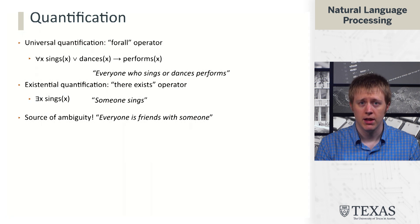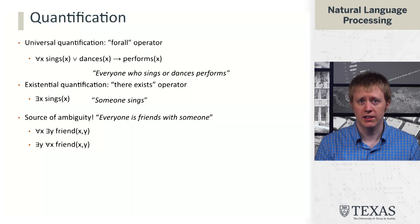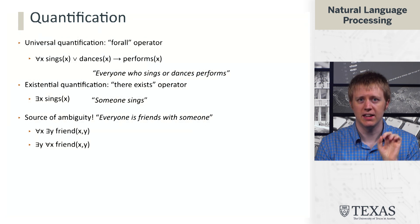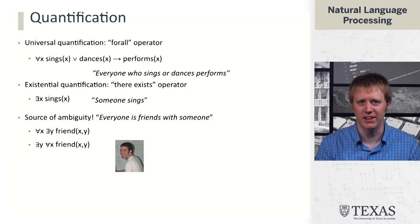Quantification is also a source of ambiguity. The statement 'everyone is friends with someone' has two interpretations. The first: for all x, there exists y such that x and y are friends — meaning everyone has at least one friend. The second: there exists y such that for all x, x is friends with y — meaning there is one specific person who is friends with everyone. Think of Tom from MySpace: whenever you joined, Tom was automatically in your friends list, making him the person who is friends with everyone.